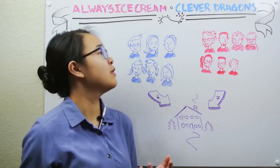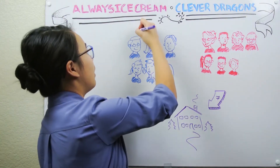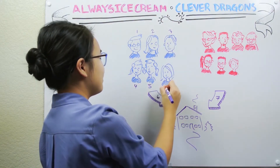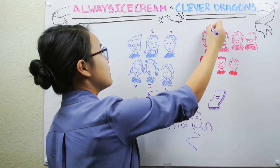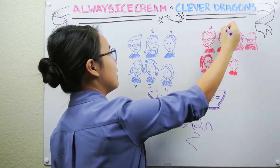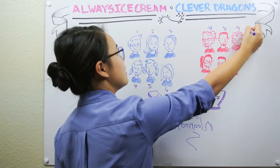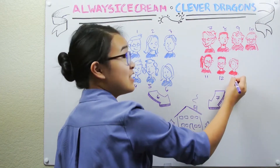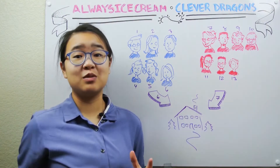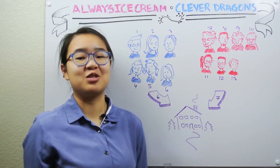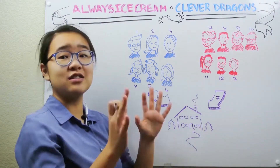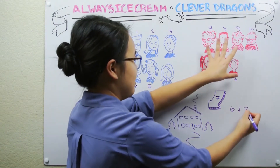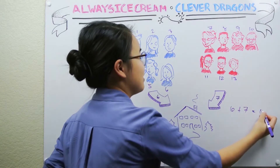If you were to count everybody up, you would count one, two, three, four, five, six, seven, eight, nine, ten, eleven, twelve, thirteen. So thirteen people all in all in your house — it's going to be very crowded. And this is also how we can tell that six plus seven is equal to thirteen.